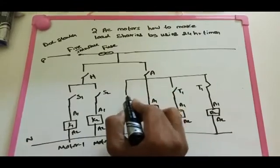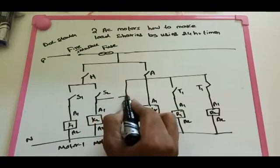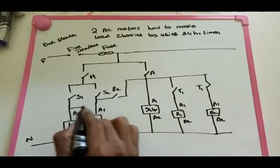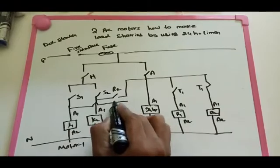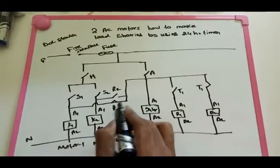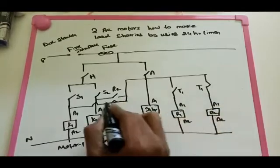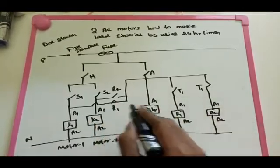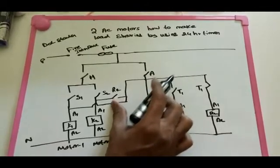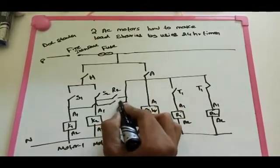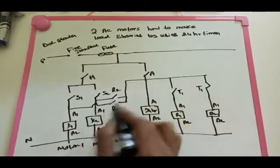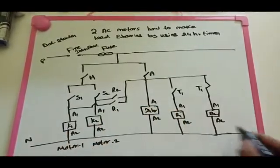So here we made R2's NO for S2 and R1's NO for S1. We need to change here - we already made NC, so we are making here also NO. So here also NO is okay. That means when the 24-hour timer is activated, R1 will be activated. So the relay will operate and the motor will operate at the time of timer selection. This is the indication of whether the motor will run or stop - this is an indication lamp.